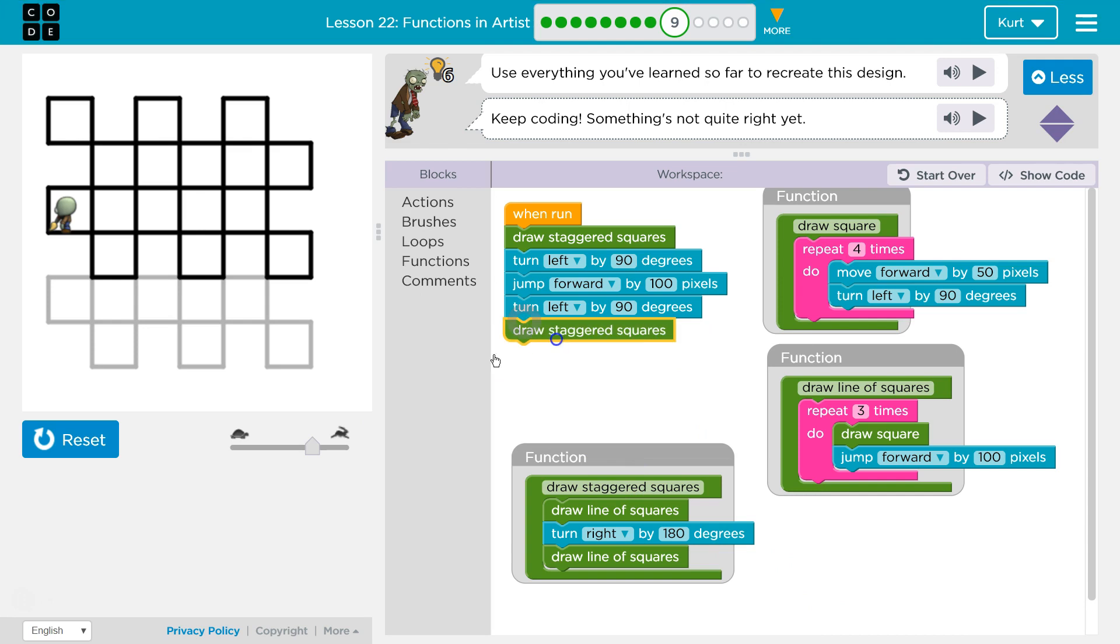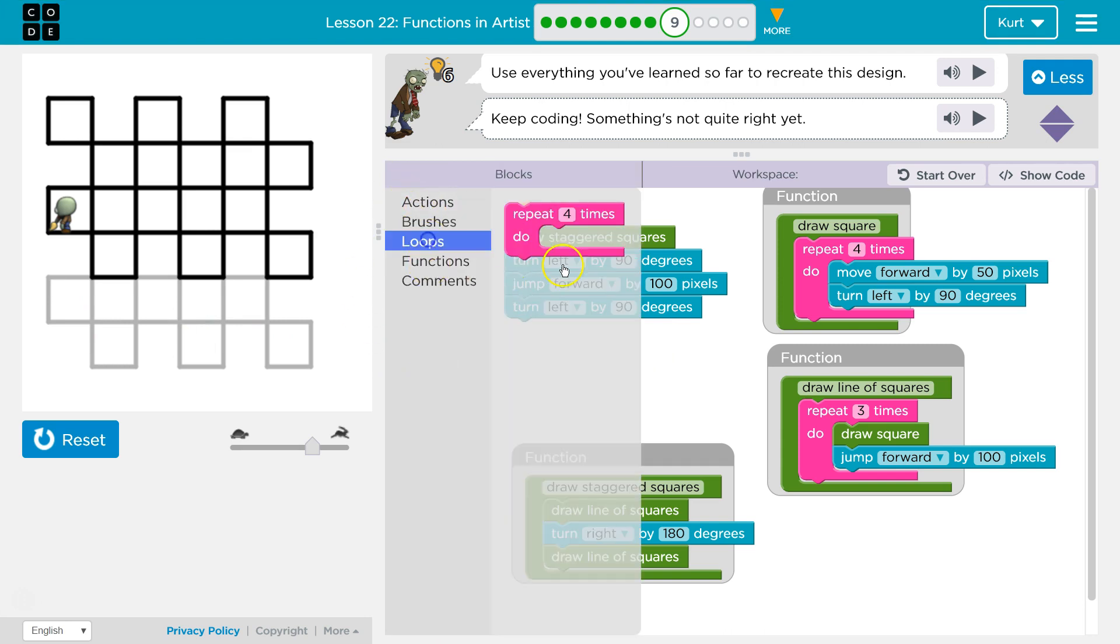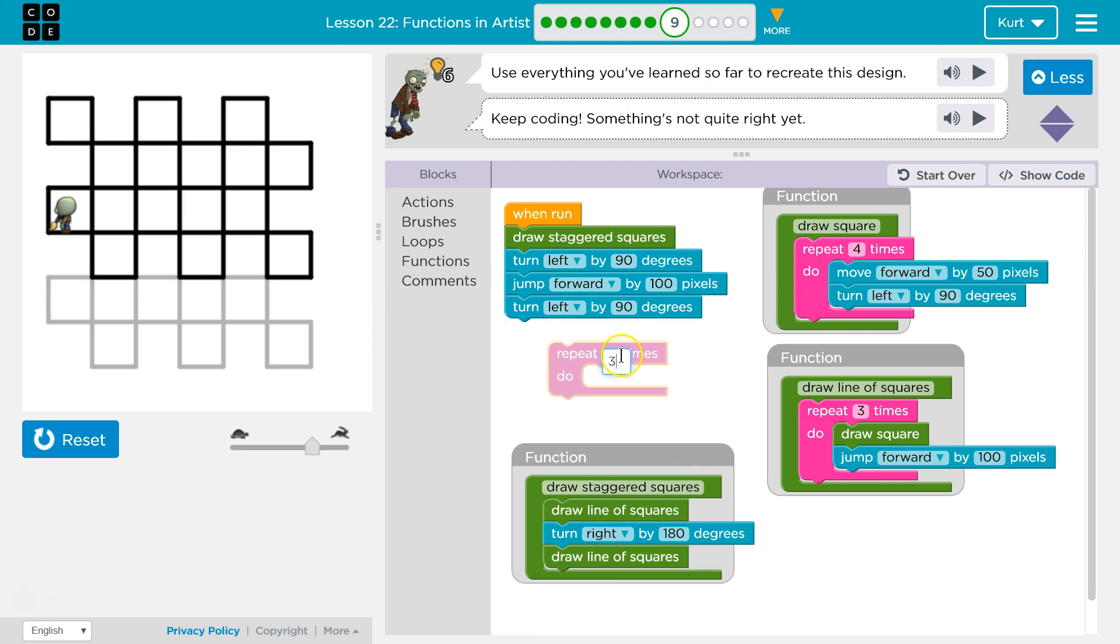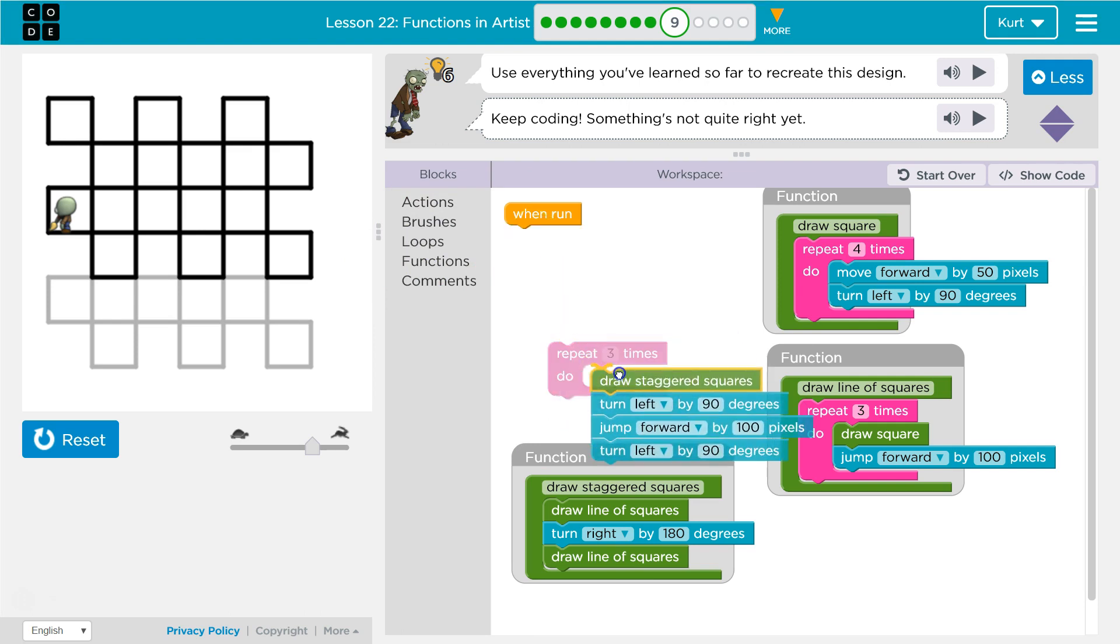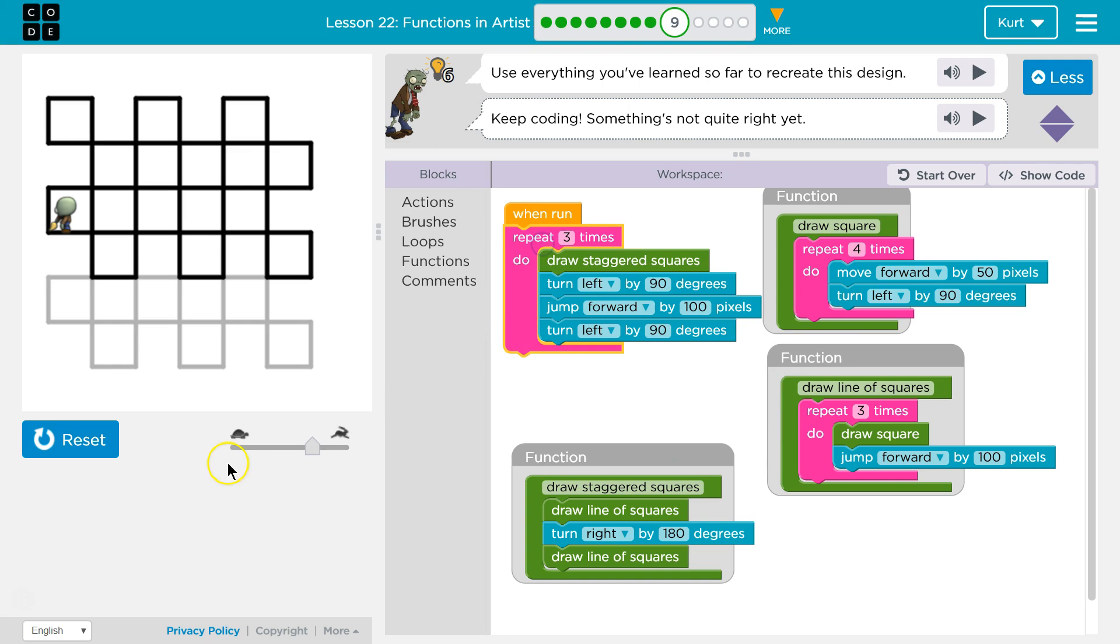And then, I can even say this is, too, because once I'm all done, it doesn't matter if I also turn left and jump forward. As long as I don't draw again, the image will be the same. So, to keep the code short and nice looking, let's just use a repeat by three. And now, let's see what we got.